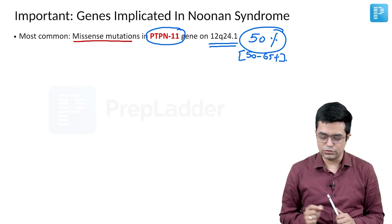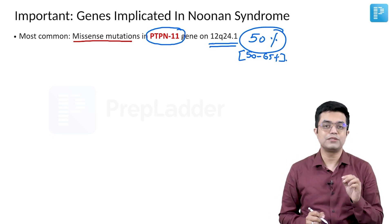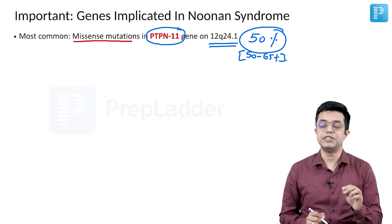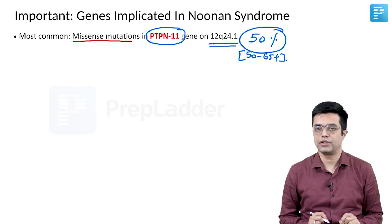Almost half of Noonan syndrome cases involve the PTPN11 gene, making it the single most common gene involved.